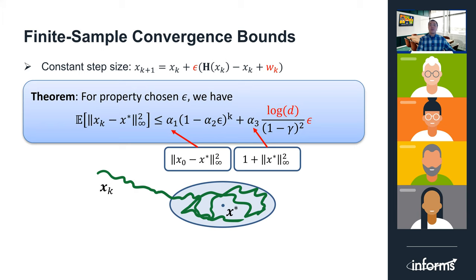We next present our main results: the finite sample convergence guarantees of the stochastic approximation algorithm. First, when using a proper constant step size, we have the following finite sample bounds composed of two terms. The first term goes to zero geometrically fast as k tends to infinity, while the second term is a constant independent of k. Geometrically, this means that the iterate x_k converges exponentially fast to a ball centered at the solution x*. The size of the ball is proportional to the constant step size we use, and the dimensional dependence is only log d, where d is the dimension of x_k.